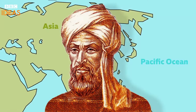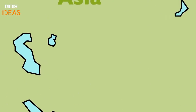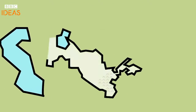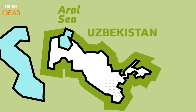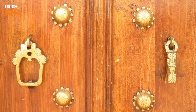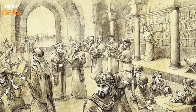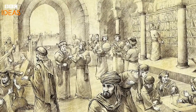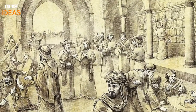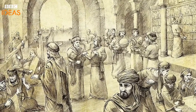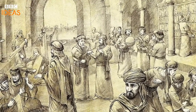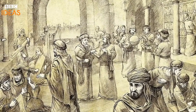He was born around 780 AD in the region now known as Uzbekistan. His name suggests he came from Khawarizma. Known as al-Khawarizmi, he was director in the House of Wisdom, an intellectual centre for scholars in 9th century Baghdad.